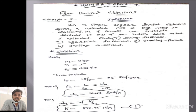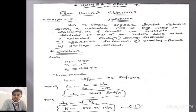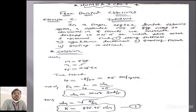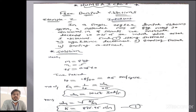Now what this statement says: In a single degree damped vibration system, a suspended mass of 8 kg makes 30 oscillations in 18 seconds. The amplitude decreases to 0.25 of the initial value after 5 oscillations. Find: number 1, spring stiffness; number 2, logarithmic decrement; number 3, damping factor; number 4, damping coefficient. So these 4 things we have to determine in this example.